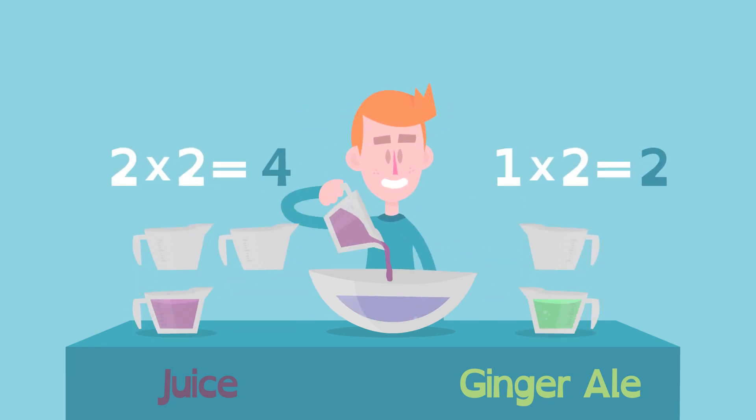If he doubles his recipe, meaning he multiplies it by 2 to start with 4 cups of juice, he'll need 2 cups of ginger ale to keep the ratio of juice to ginger ale 2 to 1.